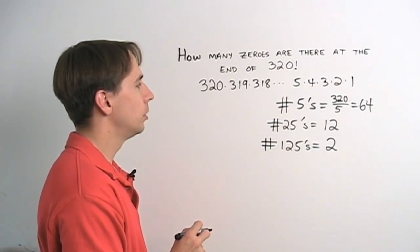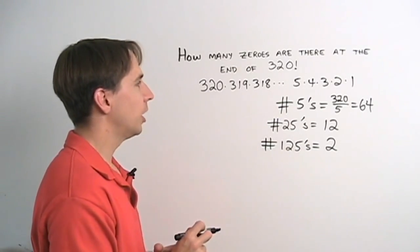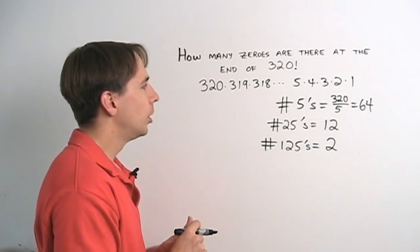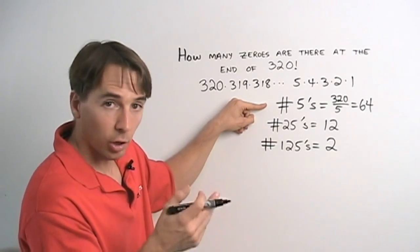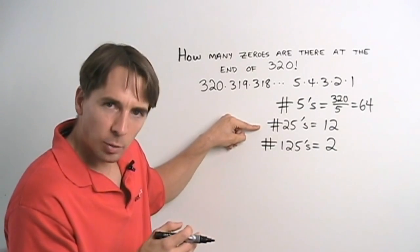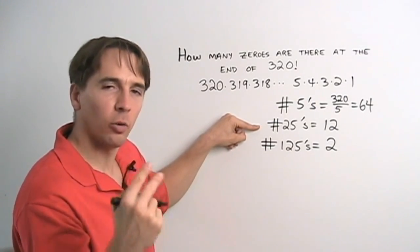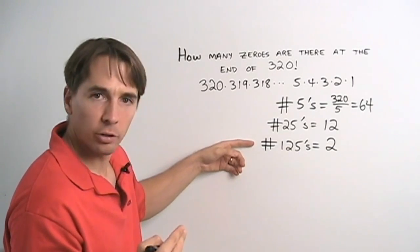But now what do we do? We have our multiples of 5, multiples of 25, multiples of 125. And we want to count the number of factors here. Well, if we look at our multiples of 25, we count our multiples of 25 once here, because they are multiples of 5. Then we count them again here. And that's exactly what we want to do. We want to count them twice, once for each factor of 5.